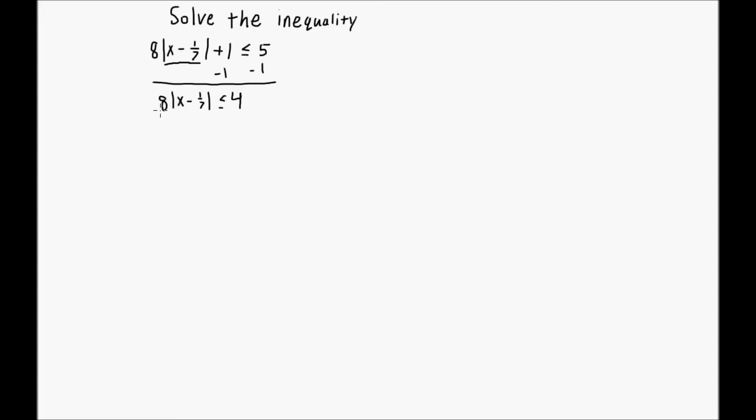Okay, now I just need to divide through both sides by 8. And I have open absolute value, x minus 1/7, closed absolute value, is less than or equal to 4 over 8. Well, 4 divided by 4 is 1, 8 divided by 4 is 2, so this is 1/2.